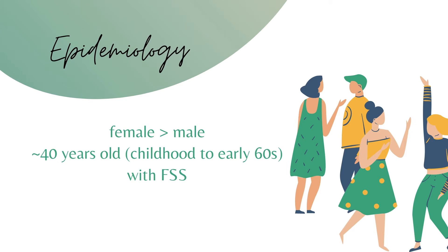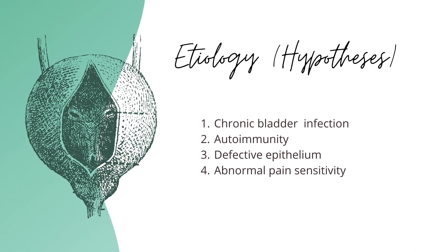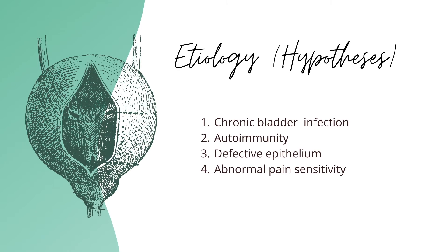ICBPS affects more females than males with an onset age of around 40 years old, and it commonly affects individuals with other FSS syndromes. It presents as a chronic condition of urinary bladder pain, urinary frequency and urgency, and dysuria. Symptoms are variable, and in 10% of cases are associated with a Hunner lesion, which is a single ulcer on cystoscopy. Hypotheses for the possible causes of ICBPS include chronic bladder infection, autoimmunity, defective epithelium, and abnormal pain sensitivity.